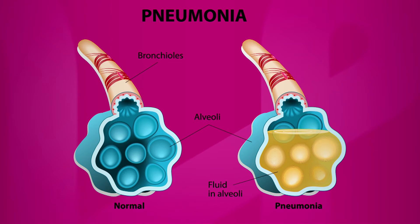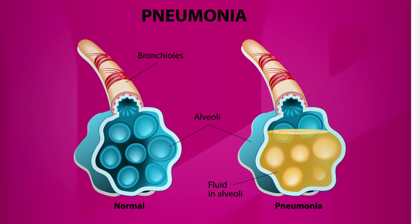Looking on the left, this is what a normal alveoli would look like — air cells get in and into our bloodstream to help aerate our bodies. Looking on the right, that's when pneumonia sets in, and that's exactly what happens. There are over 100,000 of those alveoli in our lungs.